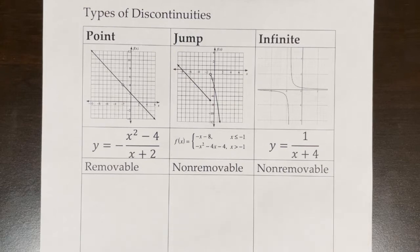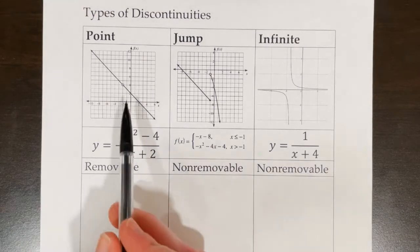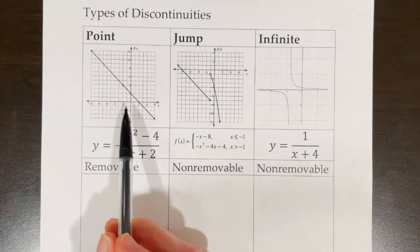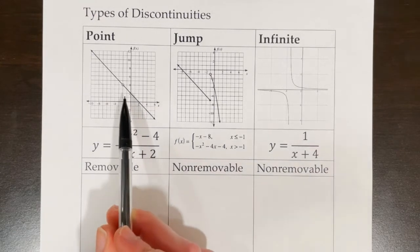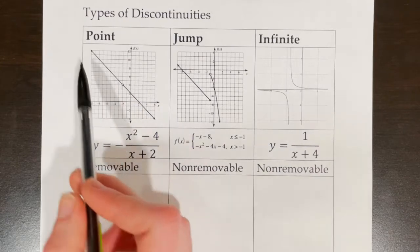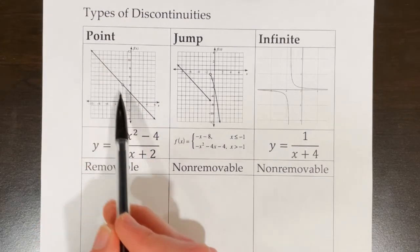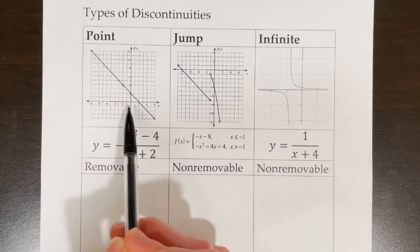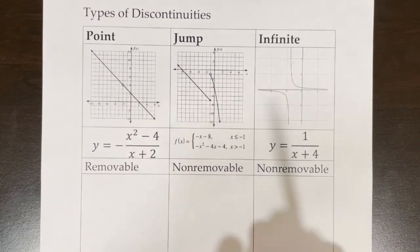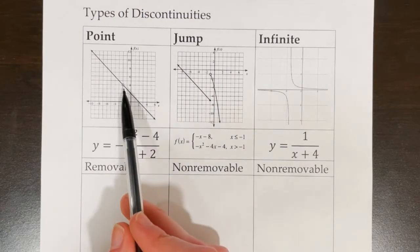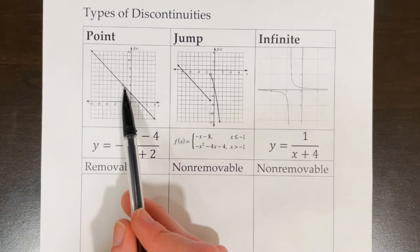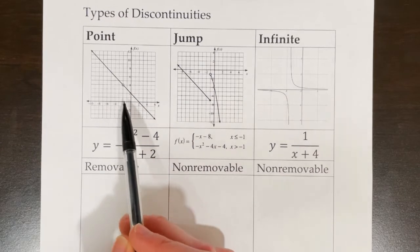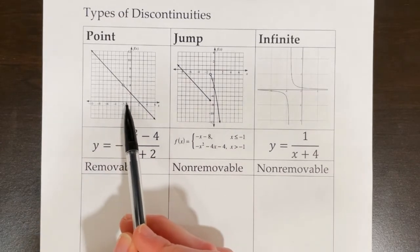1.10 is about three different types of discontinuities in graphs. One type of discontinuity is a point discontinuity, and this is what we typically know as a hole in a rational function. Everywhere else on the domain the function is defined, but right there there's just a hole — it doesn't exist at that one point. It exists when it's really, really close to the hole, but it just doesn't exist at this point. In this case, the point is negative 2, 4.